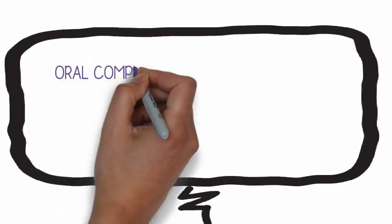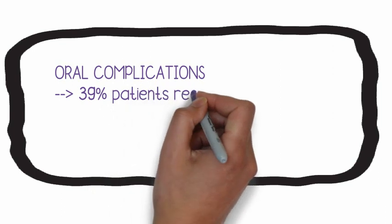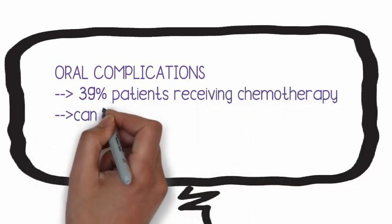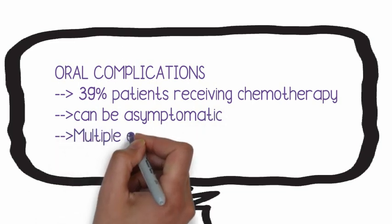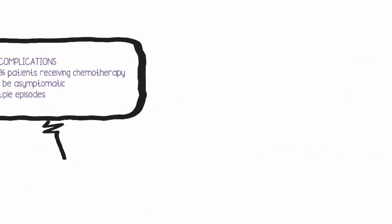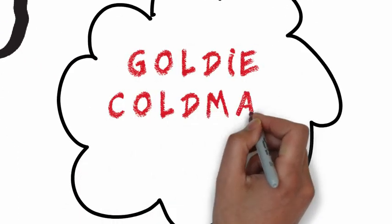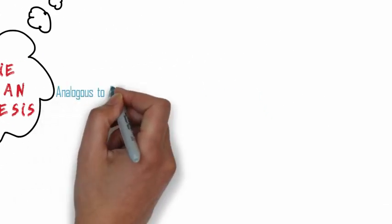Our oral cavity and gastrointestinal tract have high cellular turnover rates, which makes them exceptionally susceptible to the side effects of chemotherapeutic drugs. Oral complications are seen in 39 percent of patients receiving chemotherapy, and they are not always symptomatic. Patients may have multiple episodes of the same.